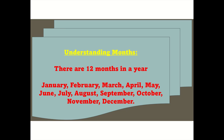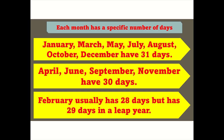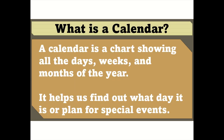Understanding months: There are 12 months in a year — January, February, March, April, May, June, July, August, September, October, November, December. Each month has a specific number of days. January, March, May, July, August, October, and December have 31 days. April, June, September, and November have 30 days. February usually has 28 days but has 29 days in a leap year.